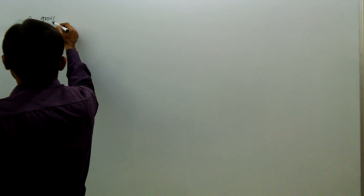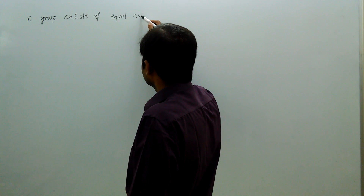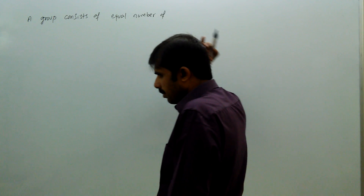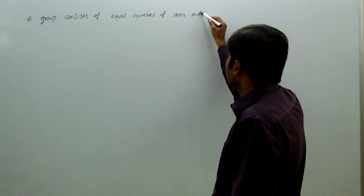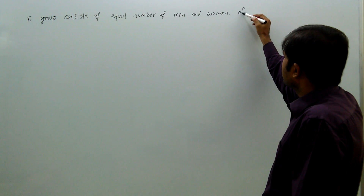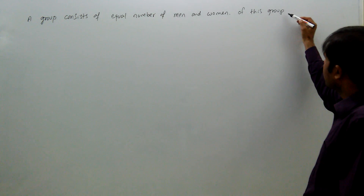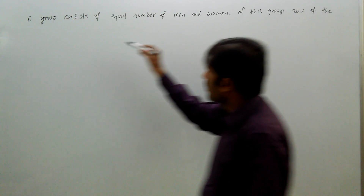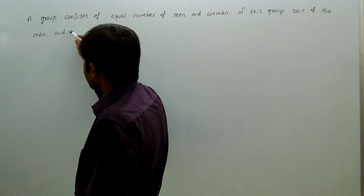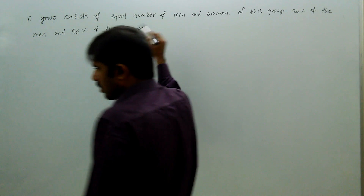A group consists of an equal number of men and women. Of this group, 20% of the men and 50% of the women are unemployed.